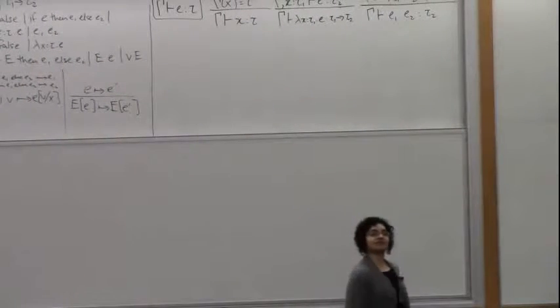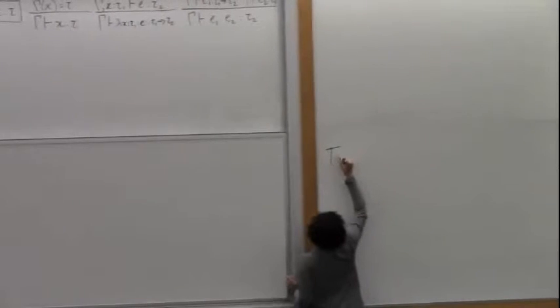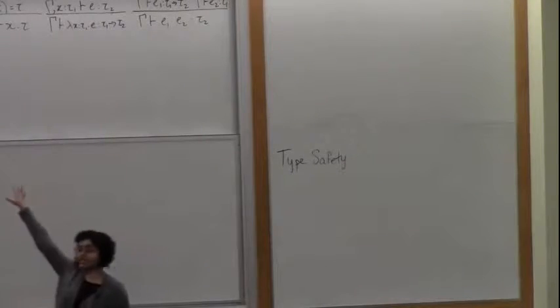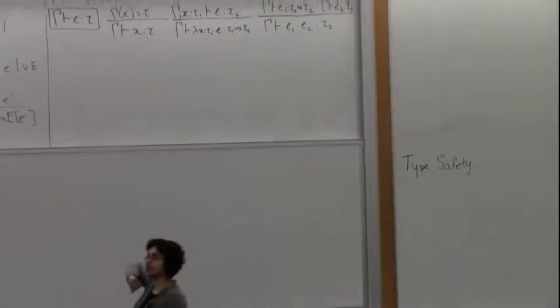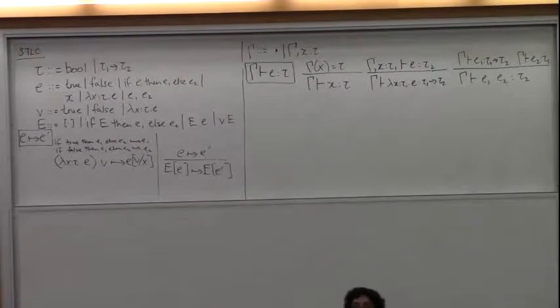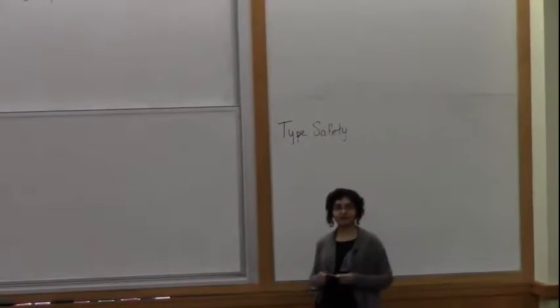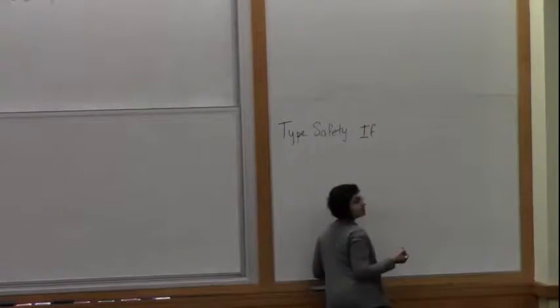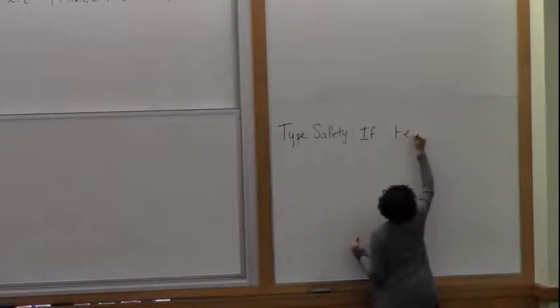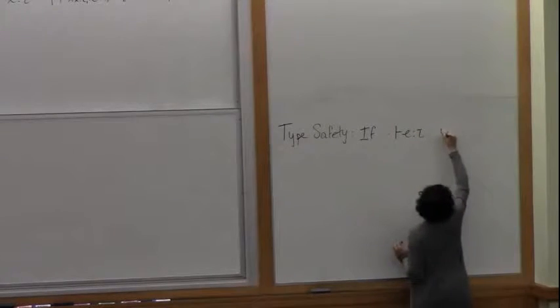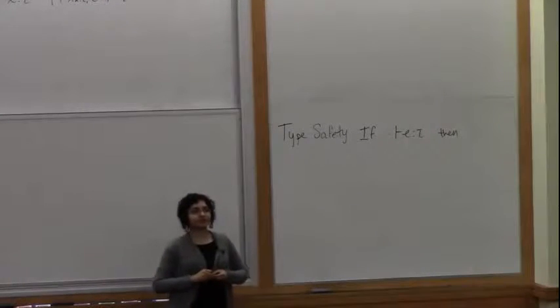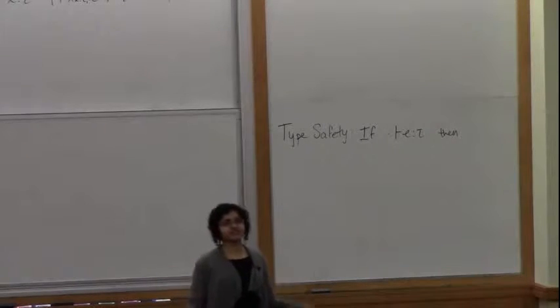Let's write down a statement of type safety. Type safety, type soundness — by the way, simply typed lambda calculus from yesterday is up on the top board with the usual call-by-value small-step semantics. We want to prove type safety. How do we state that? We want to show that if a closed term E has type tau, then it reduces to a value. That's actually strong normalization — that's even stronger than what I want.